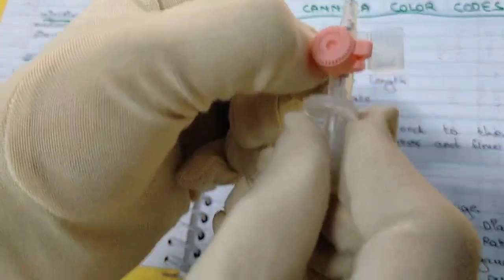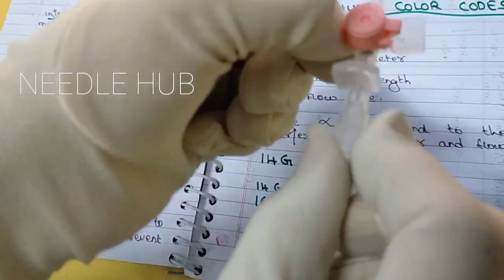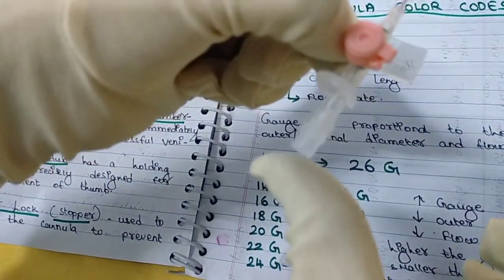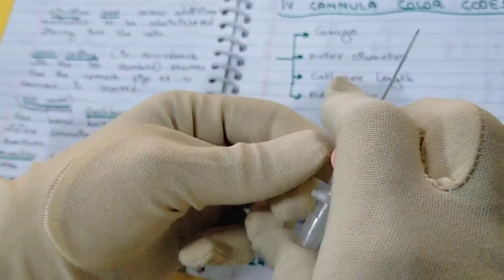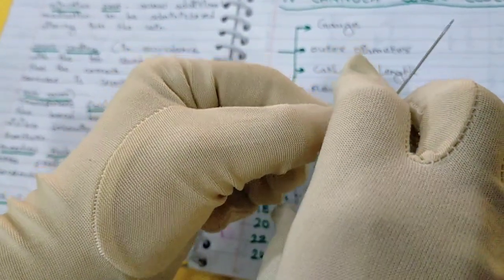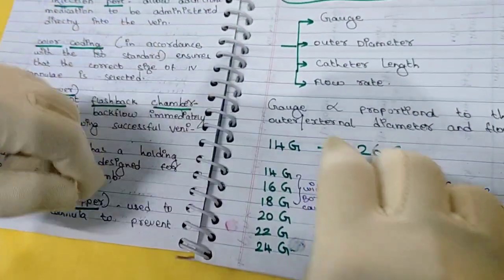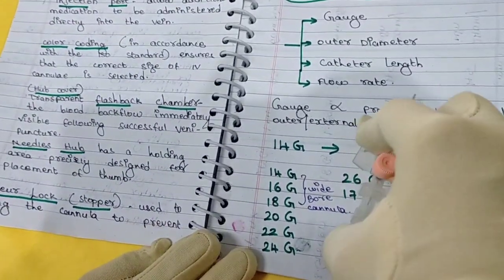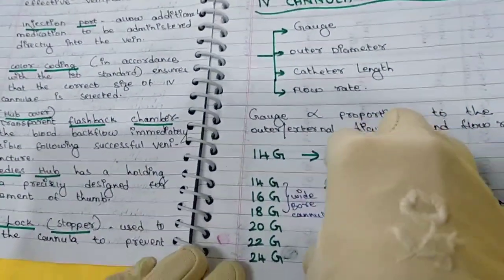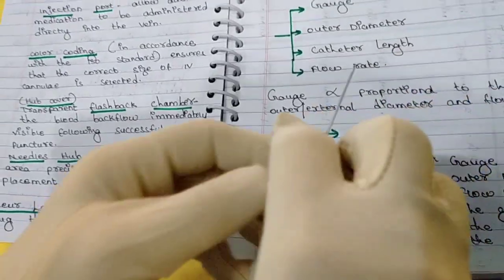Then next you have the needle hub — this is the needle hub, which is exactly designed to place your thumb. This is the way you are going to hold it: the wings where you keep your fingers, and here you keep your thumb. This is how you hold it — at 30 degrees initially, then you go perpendicular to the skin as you insert it.